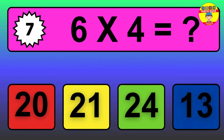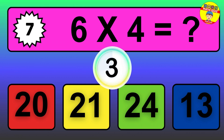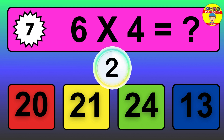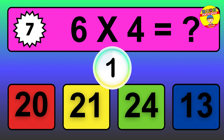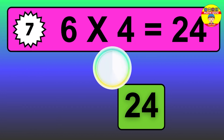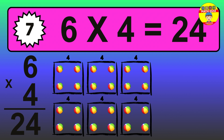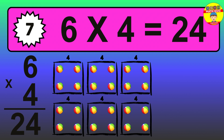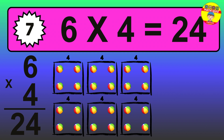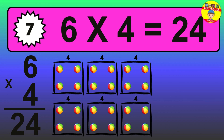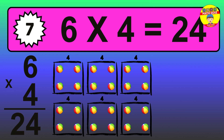Question 7. 6 times 4 equals what? The answer is 6 times 4 is 24. To calculate, we have 6 groups with 4 balls each one. So, how many balls do we have? 24 balls.